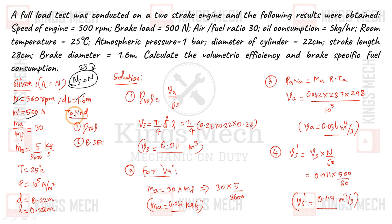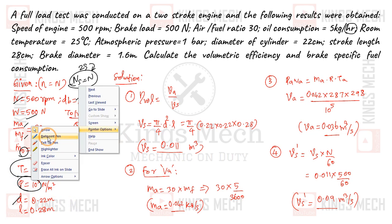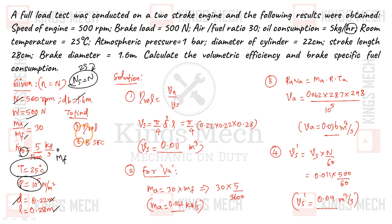The given values include: speed N, break load W, diameter of break drum, air-fuel ratio MA divided by MF, and oil/fuel consumption MF at 5 kg per hour. Initial temperature, initial pressure, and stroke length are also given. We have to find the volumetric efficiency and brake specific fuel consumption.